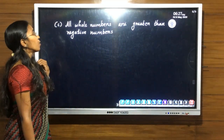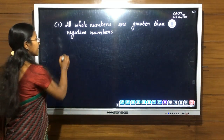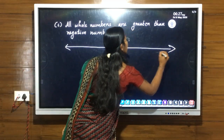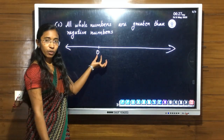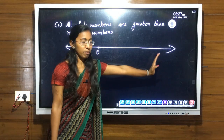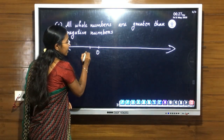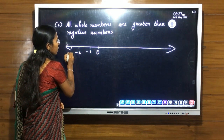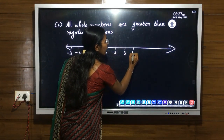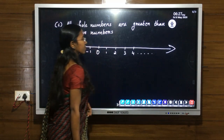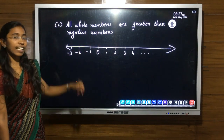Our next property: all whole numbers are greater than negative numbers. We can check this on a number line. On this extended number line, I write 0. The right side of 0 is always positive numbers and the left side of 0 is negative numbers — minus 1, minus 2, minus 3 on the left, and 1, 2, 3, 4 on the right. All whole numbers are always greater than negative numbers.